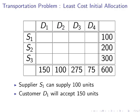So looking at this one here, that's how we would read that. We disregard all the internal cells, we are just looking at the row totals here. And for example, customer D1 will accept 150 units. So for example, S3 can supply 300, but the most it will be able to ship out to any one customer would be 275 to D3.